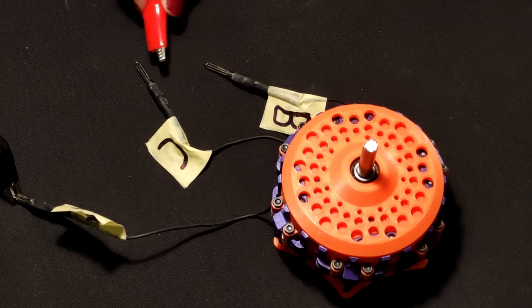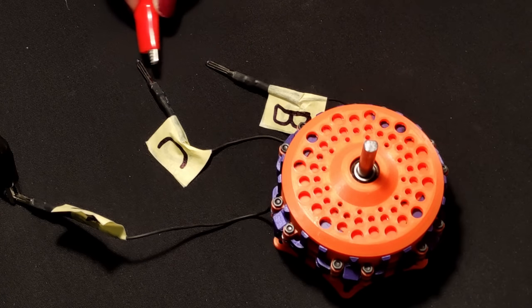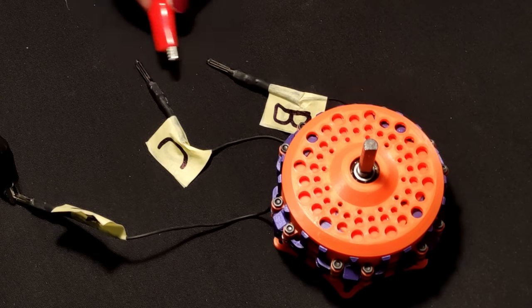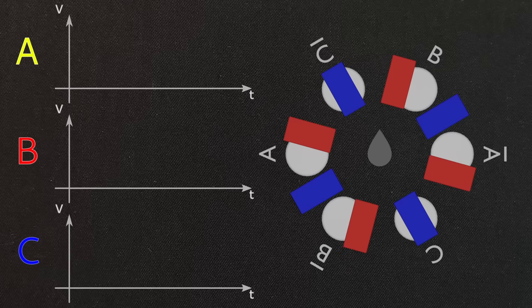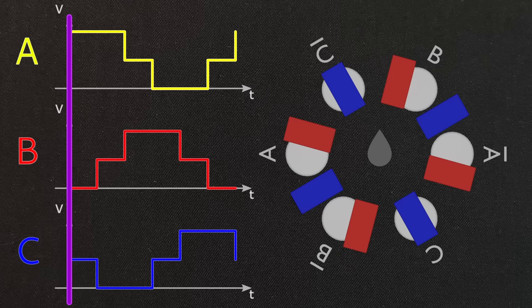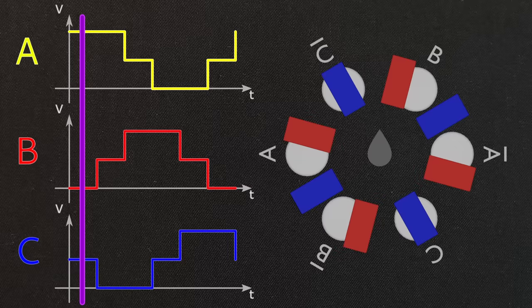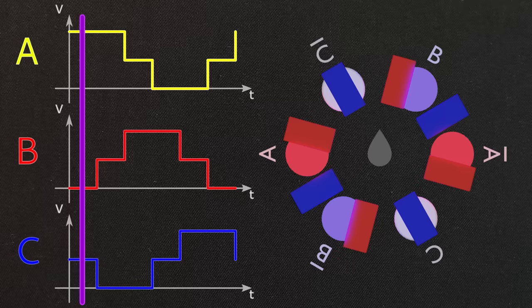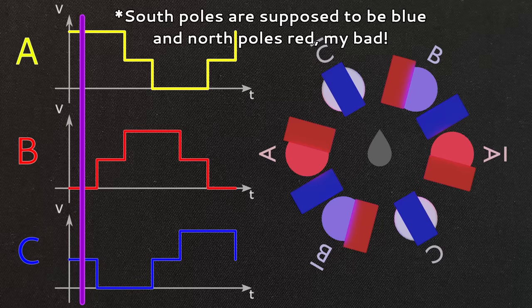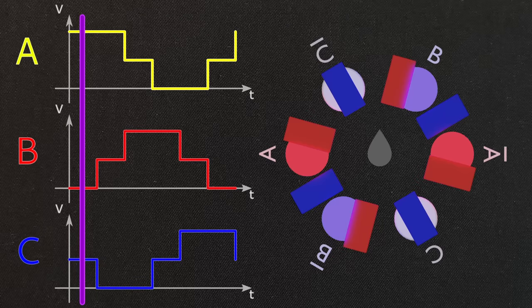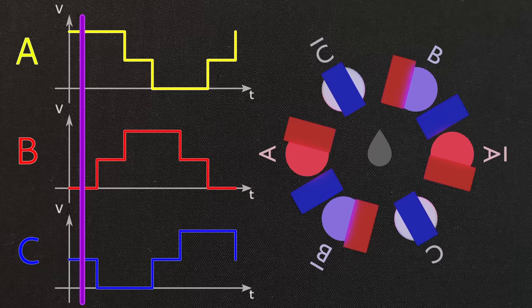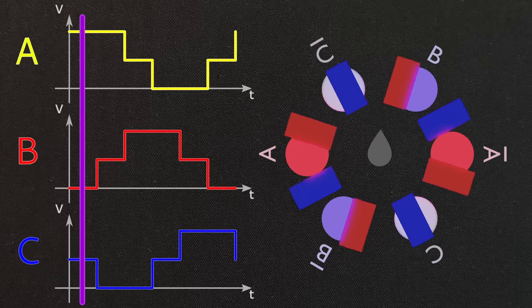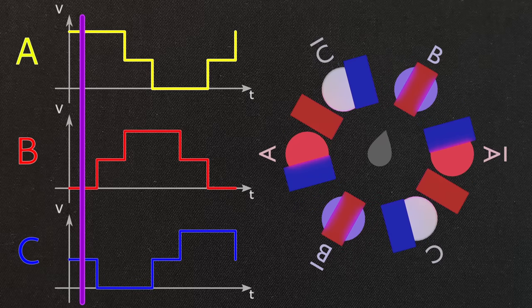Now all that remained was to power up the motor. However, as alluded to before, we need to actually control the way power is applied to the motor for it to spin. In a simplified way, first the A phase gets connected to power and the B phase to ground, while C phase is not connected to anything. This causes the electromagnets in phase A to generate south poles and the electromagnets in phase B to generate north poles. The permanent magnets on the rotor then rotate and align themselves to the electromagnets.